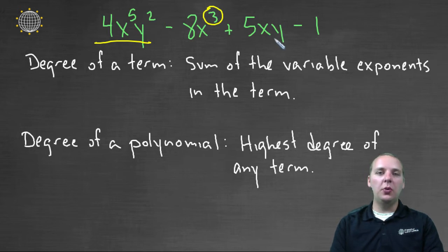What would be the degree of the third term? You'd have x¹, y¹. This term would have a degree of 2, and obviously the constant would have a degree of 0.